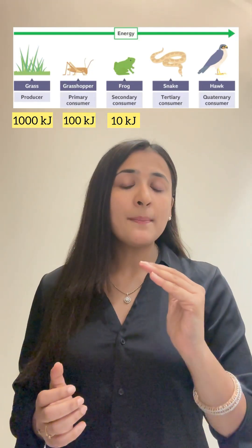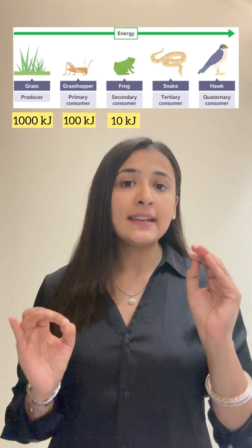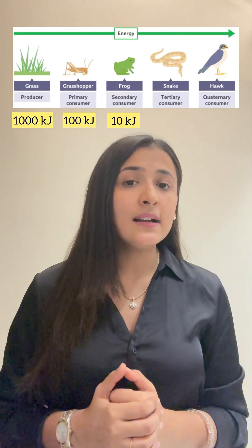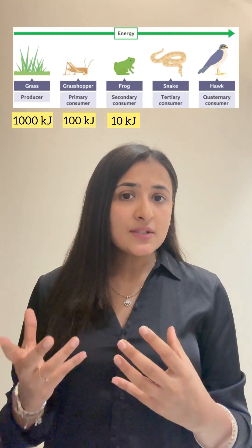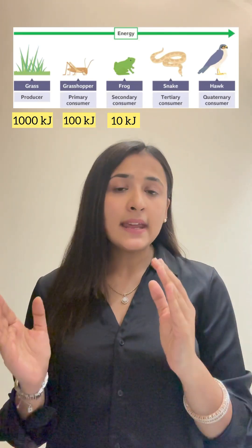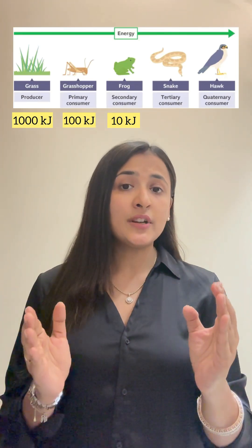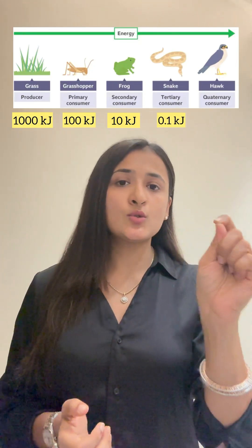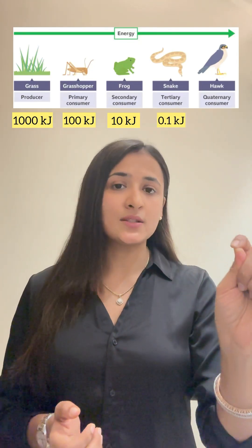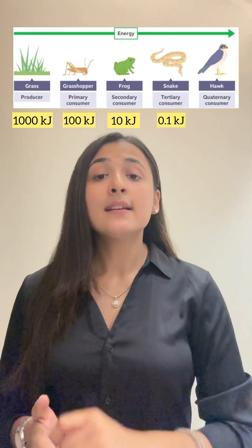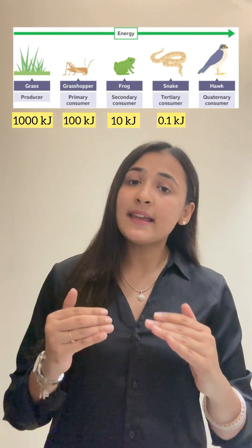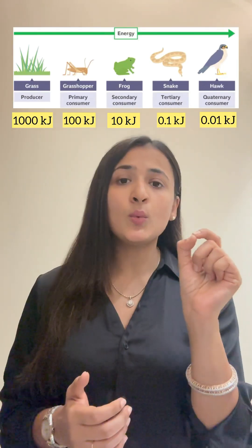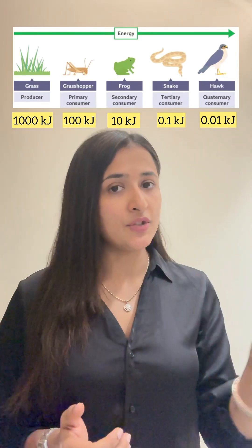Now the frog has 10 kJ of energy. How much energy will be transferred to the snake? If we take 10% of 10 kJ, then 1 kJ of energy would be transferred to the snake. Similarly, the hawk will only receive 0.1 kJ of energy from the snake.